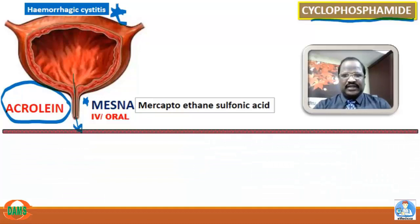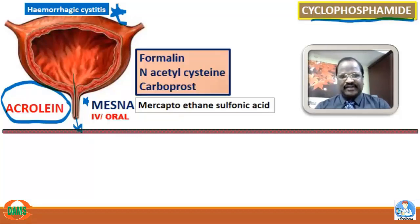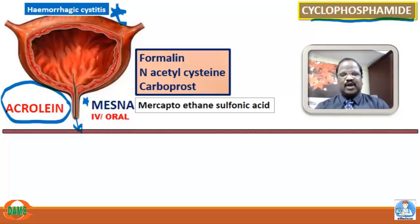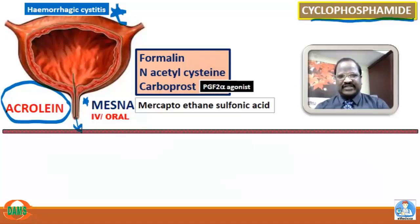According to Harrison's textbook, mesna alone is not sufficient to control cyclophosphamide-induced hematuria. For better efficacy, mesna is combined with carboprost (a prostaglandin PGF2-alpha agonist) or with N-acetylcysteine (a mucolytic agent also useful for paracetamol poisoning). So mesna is the specific antidote for cyclophosphamide, combined with either carboprost or N-acetylcysteine for better efficacy.